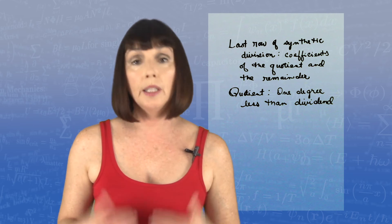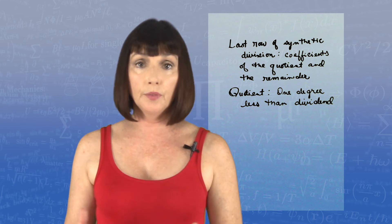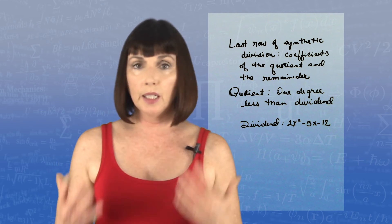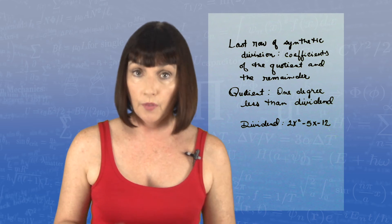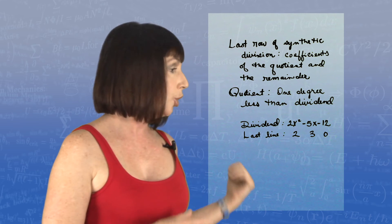So for example, in the problem we did, our dividend was 2x squared minus 5x minus 12. The last row of our synthetic division gave us 2, 3, 0.